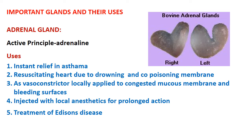The adrenal gland, located at the top of the kidney and sometimes called suprarenal gland, has adrenaline as its active principle. Uses include instant relief in asthma, resuscitating the heart due to drowning and CO poisoning, as a vasoconstrictor locally applied to congested mucous membranes and bleeding surfaces to stop bleeding, injection with local anesthetics for prolonged action, and use in Addison's disease.